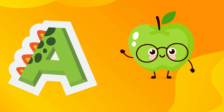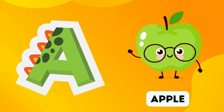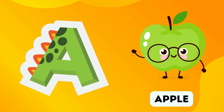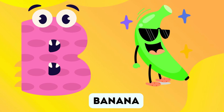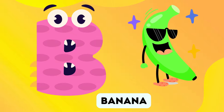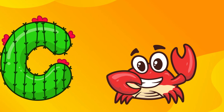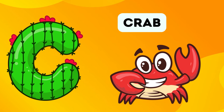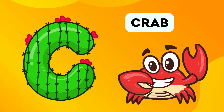A. A is for Apple. Apple. B. B is for Banana. Banana. C. C is for Crab. Crab.